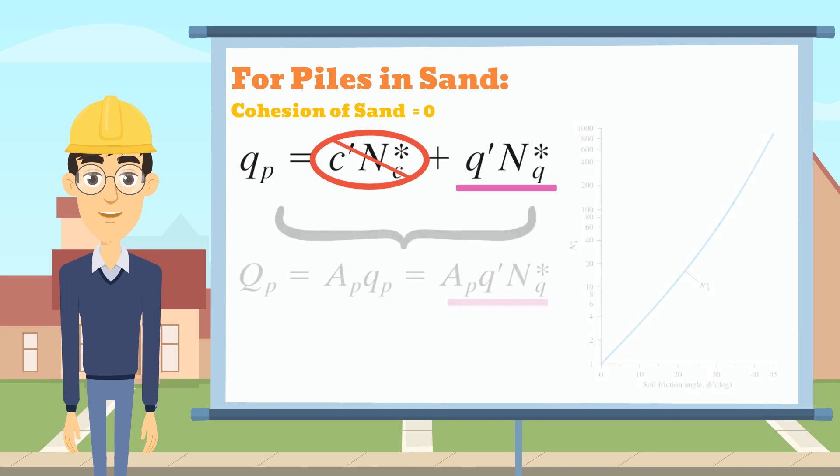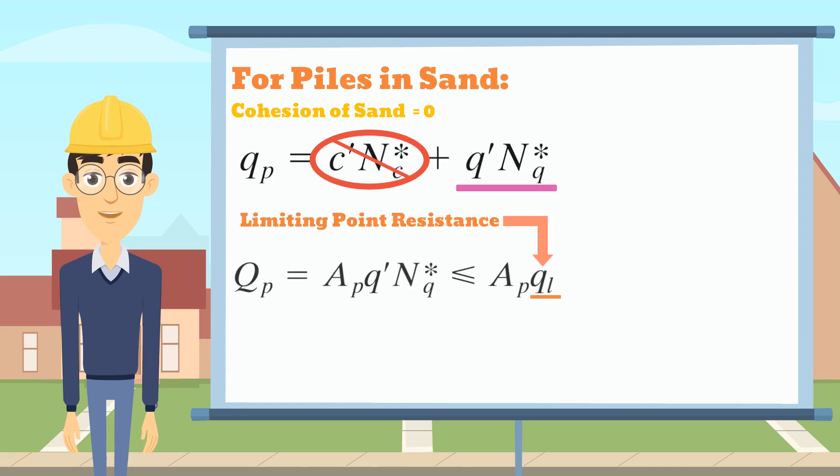However, the value should not exceed the limiting point resistance, ql, which is equal to half of the atmospheric pressure times Nq and tangent of the soil friction angle.